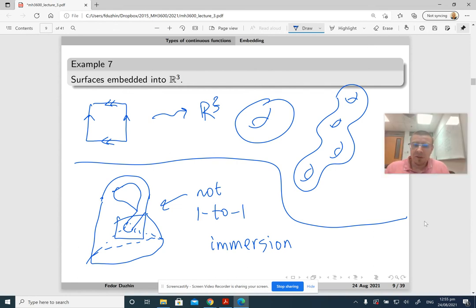But if you make a hole in the Klein bottle then you got your embedding. So if instead of the whole Klein bottle you make a little circular hole here, then whatever remains can be embedded into the 3D space.